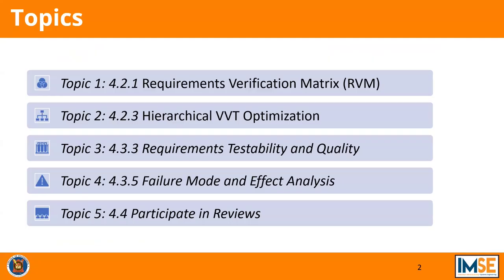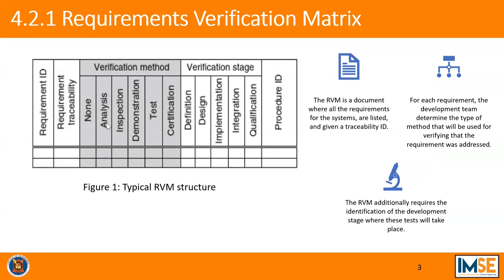These are Requirements Verification Matrix and Hierarchical VPT optimization. First, I will go through RVM. Here is the template for RVM. To develop an RVM, it is required to have some good requirements that need to be fulfilled. The RVM is a document where all the requirements for the systems are listed and given a traceability ID.